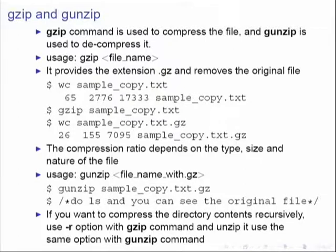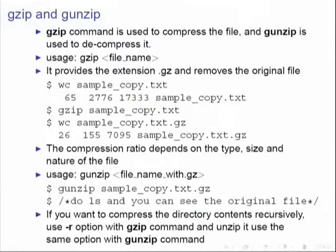The first two commands are gzip and gunzip. The gzip command is used to compress a file and gunzip is used to decompress or uncompress the file. The usage is gzip followed by a file name — for example, gzip followed by sample1.txt. Before that, try running wc sample1.txt to see statistics of that file: how many lines, characters, and words are present.